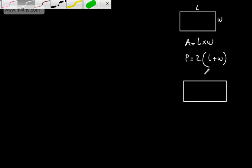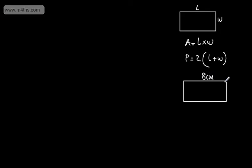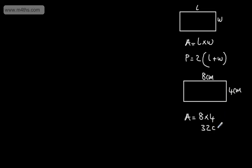Let's say we have a rectangle with a length of 8 centimetres and a width of 4 centimetres. The area would be 8 times 4, which gives us 32. The units are centimetres squared because it's an area.